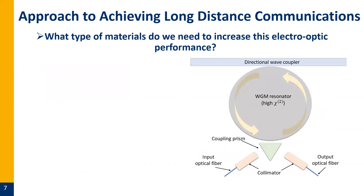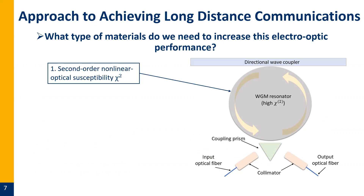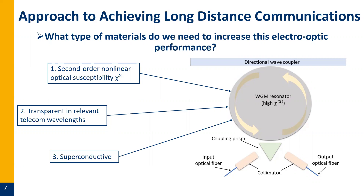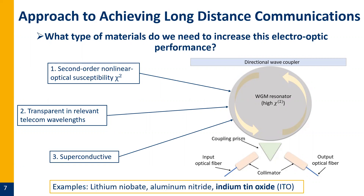Looking at the materials themselves and considering changes: materials for these resonators need a high second-order nonlinear susceptibility, chi-squared — without it, up and down conversion won't happen. They also need to be transparent at relevant telecom wavelengths; otherwise, photons get absorbed, quasi-particles are generated, and circuit quality suffers. If the materials are also superconducting, we can do interesting geometries. Examples include lithium niobate and aluminum nitride, as we just saw.